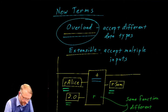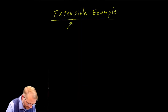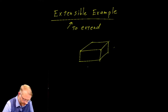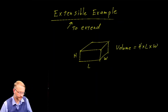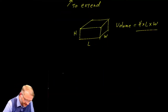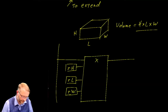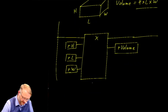We can now move on to things that are extensible. To extend — consider a rectangular solid with length, height, and width. The volume is equal to height by length by width, so we have three inputs that need to be multiplied together. You'll find that the multiplication instruction is extensible in that it will take three inputs: a real called height, a real length, a real width — all combined in a single instruction to give the volume.